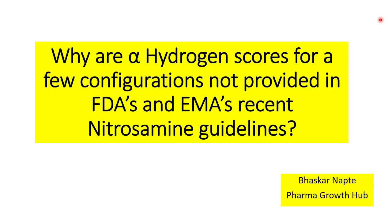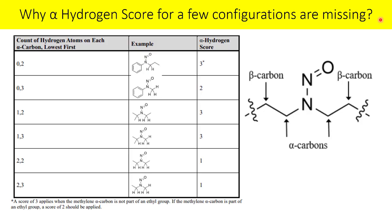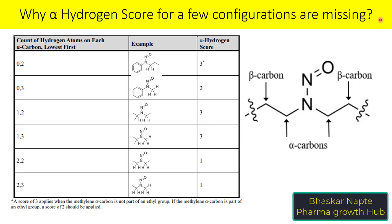First and foremost, you have to understand the three different scores for a given nitrosamine: the alpha hydrogen score, the deactivating feature score, and the activating feature score. We talked about the necessity to calculate the alpha hydrogen score — how it can be calculated, and how many configurations are considered by EMA and FDA. There is a table given in the guideline listing these configurations.